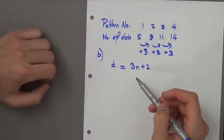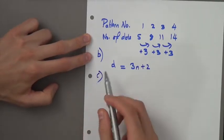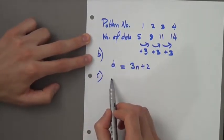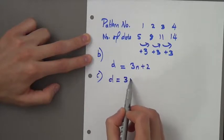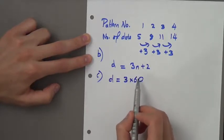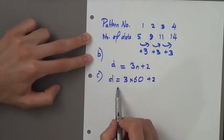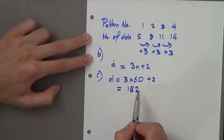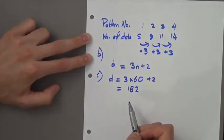The next question: find the number of dots in the 60th pattern. D is going to be 3 times 60 plus 2 — substituting 60 for n. If you do that on your calculator, that gives you 182.